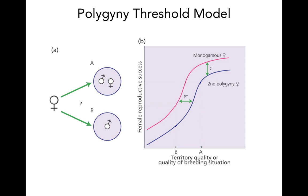Beginning with the polygyny threshold model, this is a model that is used to predict the mate choice that females will make when they're in this very particular scenario where they can choose to mate with male A, who is an already mated male with a good quality territory, or she can mate with male at territory B, which is a lower quality territory but the male is a bachelor.